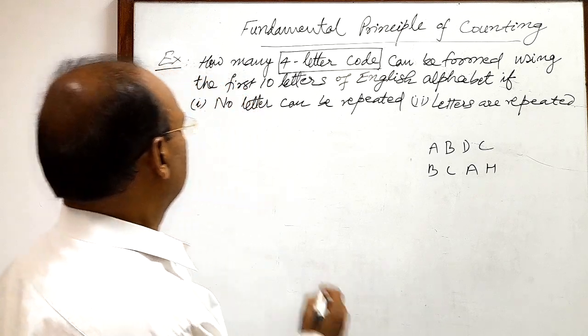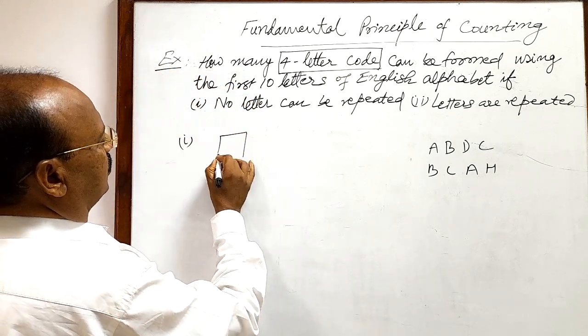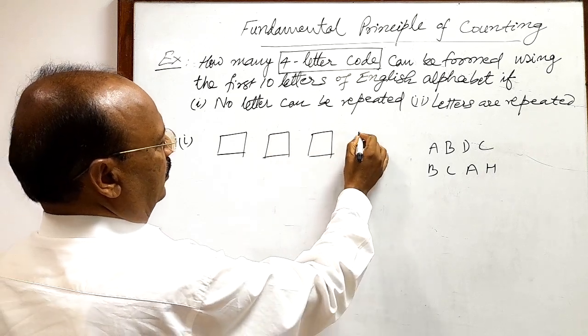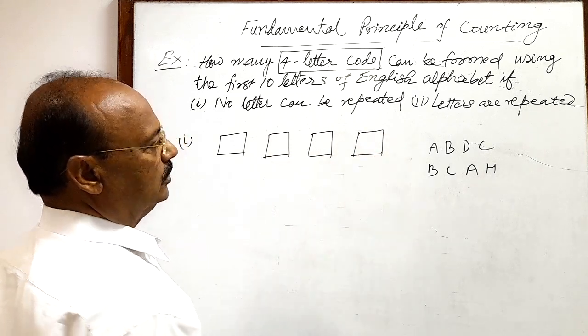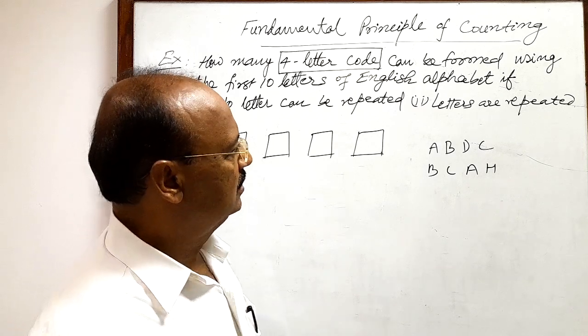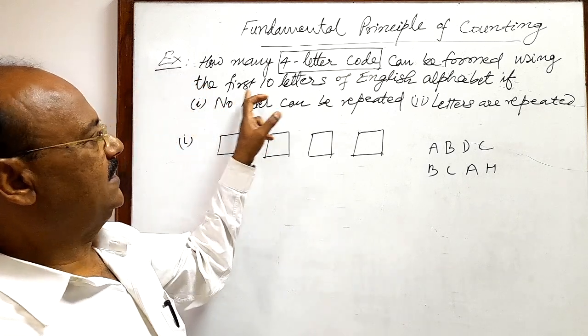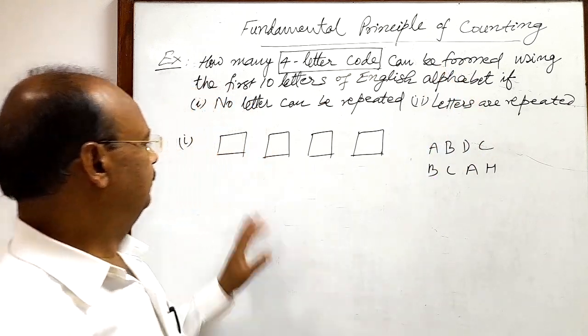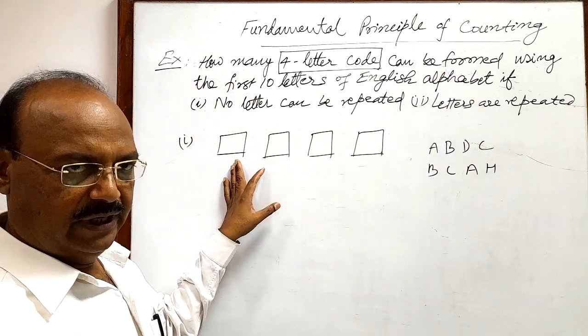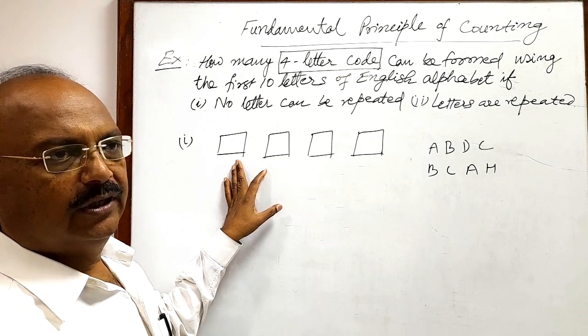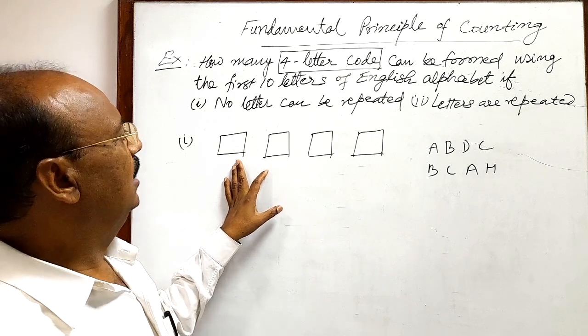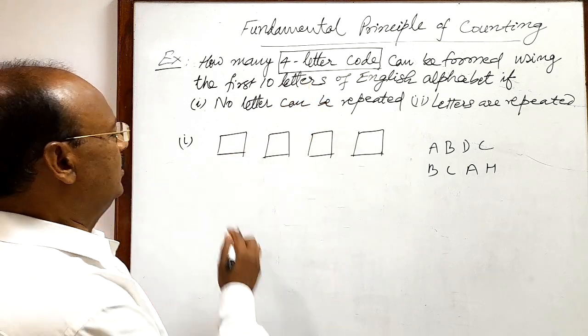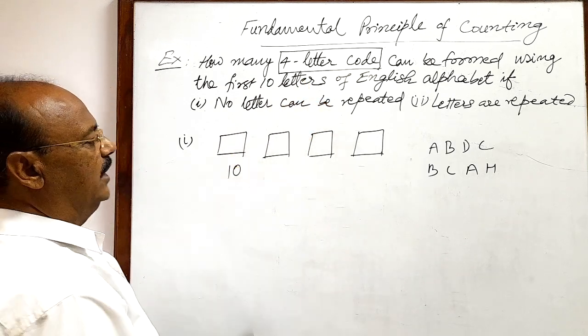Suppose we are having four places and we can choose any four letters from first 10 letters of English alphabet, then this place can be filled up by how many ways? We can choose any one letter out of first 10 letters. So, this first place can be placed in 10 different ways.